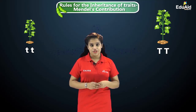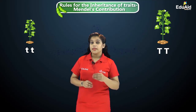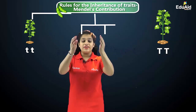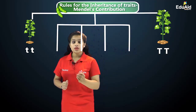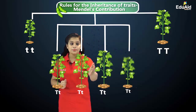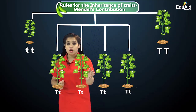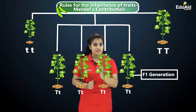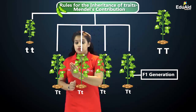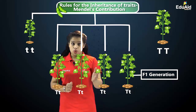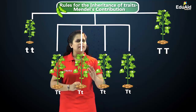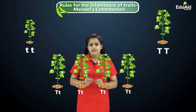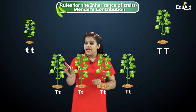He observed that in the first filial generation (F1), all the progeny were tall. This means in the F1 generation only the tall trait showed up, and the short trait did not show up at all. Mendel then chose any two plants from this F1 generation and crossed them again.